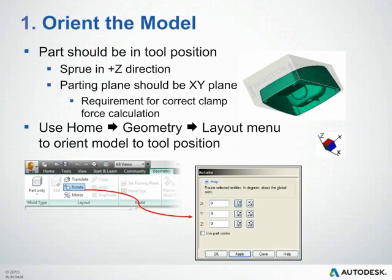It's very easy to orient your model. It's right in the home panel — go to Geometry, and in the layout menu there's an option to Rotate. You just select your part and rotate.